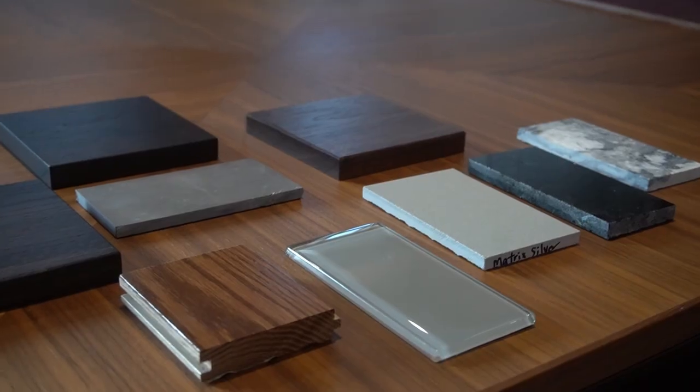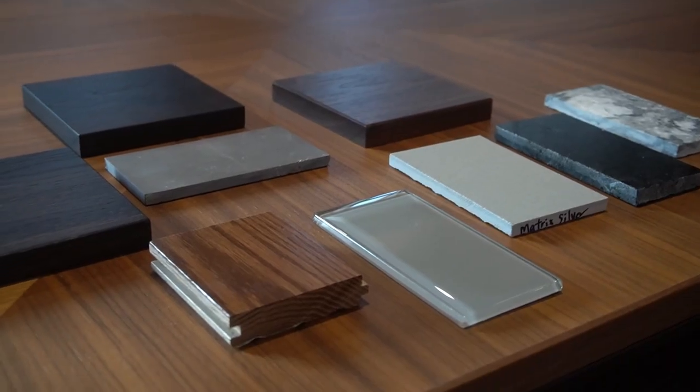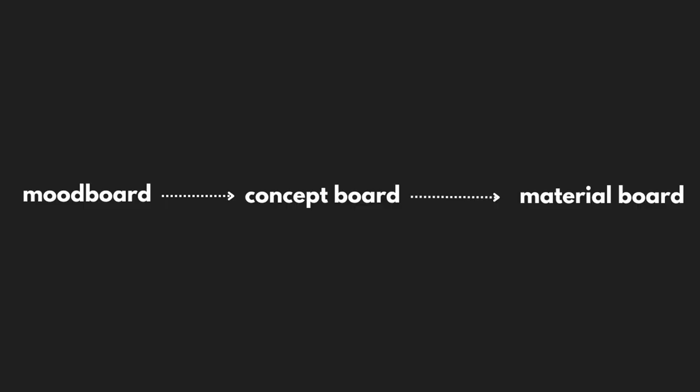A material board typically comes after. It's basically the samples and materials that you're going to be using, and again this should also be a continuation from your mood board, from your concept board, and now to the material board.